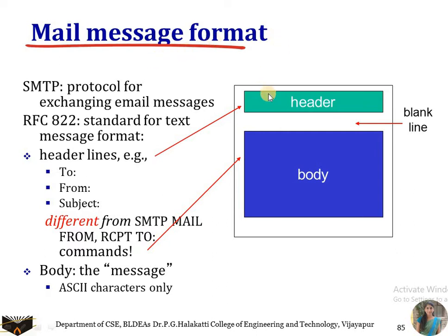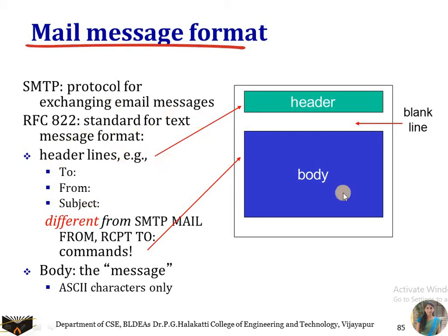The mail message format includes a header and a body. The header contains fields such as To, From, Subject, CC, and BCC. A blank line containing CR and LF separates the header from the body, indicating the end of the header. The body contains the actual message to be sent to the recipient, mainly represented in 7-bit ASCII characters.